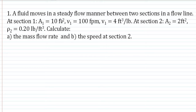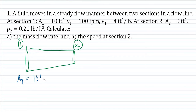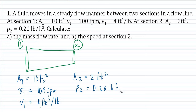Problem number one: a fluid moves in a steady flow manner between two sections in a flow line. At section one, the area A₁ is equal to 10 square feet, tapering down to section two at A₂ equal to 2 square feet. The velocity at section one, V₁, is equal to 100 feet per minute. The specific volume at section one is 4 cubic feet per pound. At section two, the given values are the area and density, with density equal to 0.2 pounds per cubic foot.